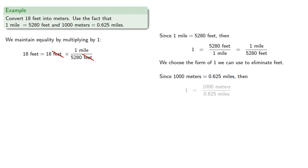So 1,000 meters and 0.625 miles are the same, or we can use the reciprocal. And again, we want to choose the form of 1 that eliminates miles. So that would be the form where miles is in the denominator.